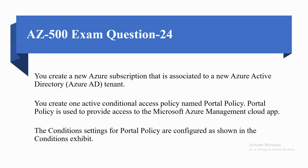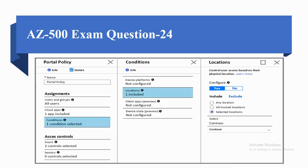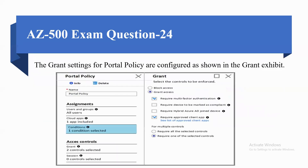Coming to the next question. You create a new Azure subscription associated with a new Azure Active Directory. You create one active conditional access policy named Portal Policy. Portal Policy is used to provide access to the Microsoft Azure Management cloud app. The condition settings for Portal Policy are configured as shown in the conditions exhibit, and the grant settings for Portal Policy are configured as shown in the grant exhibit.